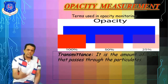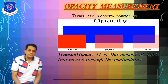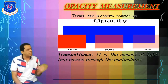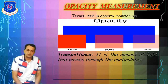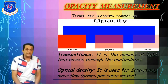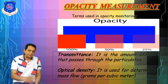Let us see some terms used in opacity monitoring. The first one is transmittance — the amount of light that can pass through the particles. Then optical density, which is the measurement of mass flow in grams per cubic meter.